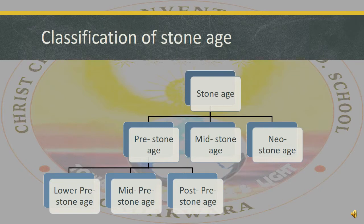After understanding what is the Stone Age, let's see how the Stone Age is classified. During this period, men expressed their artistic taste through wall paintings. The chronological sequence of the prehistoric culture can be seen in this flow chart. The Stone Age is classified into three types: Pre-Stone Age, Mid-Stone Age, and New Stone Age.